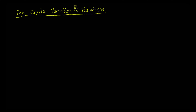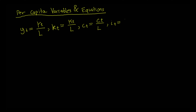One incredibly useful step in solving the Solow model is to write everything in per capita terms — both the variables and the equations. GDP per capita, denoted lowercase y, is GDP divided by the population (or labor supply, which equals population in our model). Similarly, capital per capita is capital divided by population, consumption per capita is consumption divided by population, and investment per capita is investment divided by population. All lowercase letters refer to per capita terms.